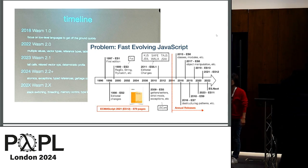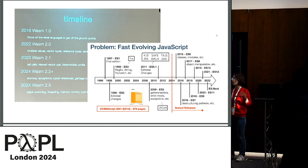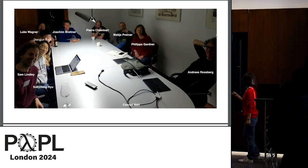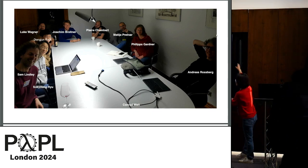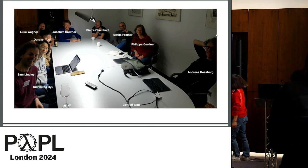So Philippa and the other people, including us, working on JavaScript need to read these 800 pages every year. It doesn't make any sense. And this is the third Thursday of the Dagstuhl — Conrad was taking a picture, so he's not here. But you can see Andreas, Philippa, Mattia, Pierre, Joachim, Luke who gave the first talk today, and my student Dongjun, and Sam.